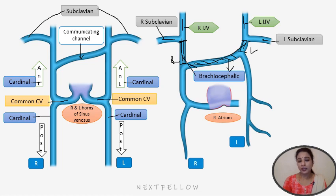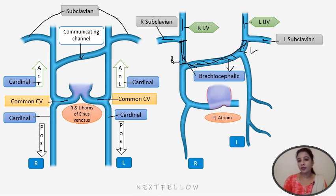To repeat: the left brachiocephalic vein is derived from the communicating channel between the two anterior cardinal veins and the segment of the left anterior cardinal vein from the opening of that communicating channel to the opening of the left subclavian vein. This whole segment forms the left brachiocephalic vein.